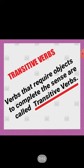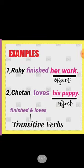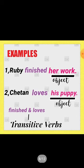Now let's come to the main topic. Transitive verbs are verbs that require objects to complete the sense. Let's understand with an example: 'Ruby finished her work.' What did Ruby finish? Her work. Without adding the object 'her work,' the sentence is incomplete, so here 'finished' is the transitive verb.